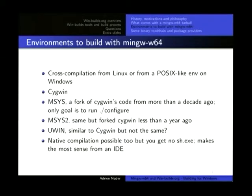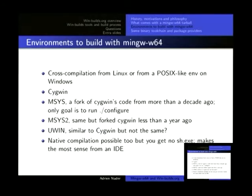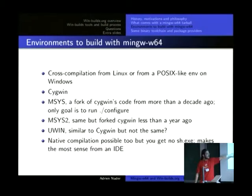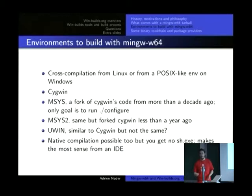Those environments include Cygwin, MSYS or MSYS2 — MSYS2 is a fork from Cygwin from about 10 or 15 years ago, and MSYS2 is a more recent fork. Then there's U-Win, which is made by AT&T, and I know no one who uses it besides them. I'm really curious to know how it performs and when it should be used instead of Cygwin, for instance, but I have no info on that. There are licensing differences; I've asked but haven't gotten an answer yet.